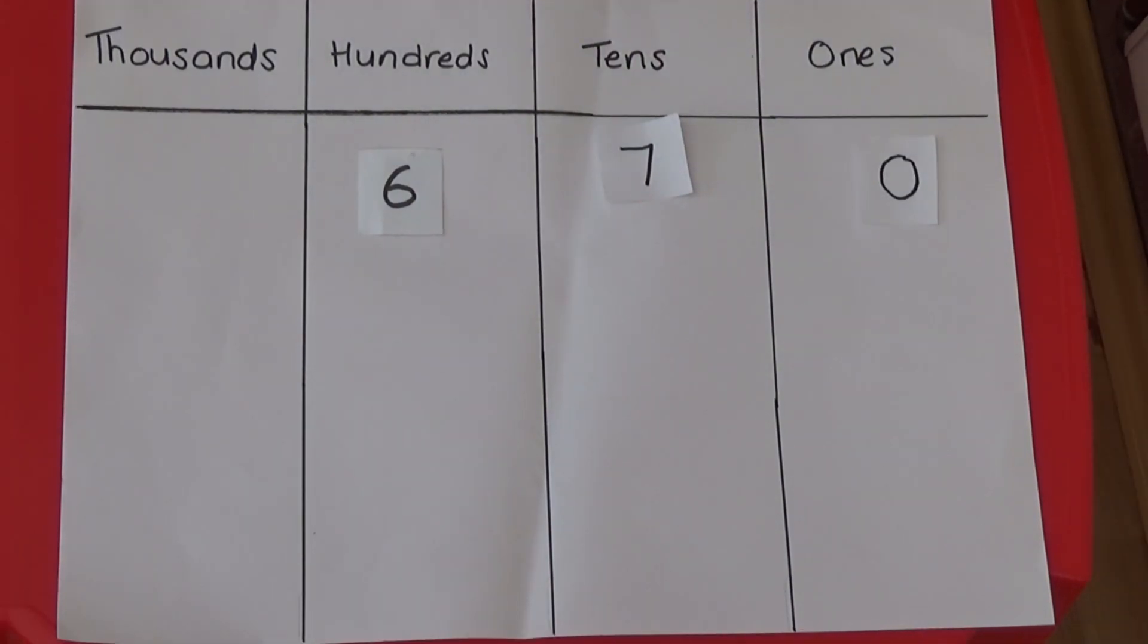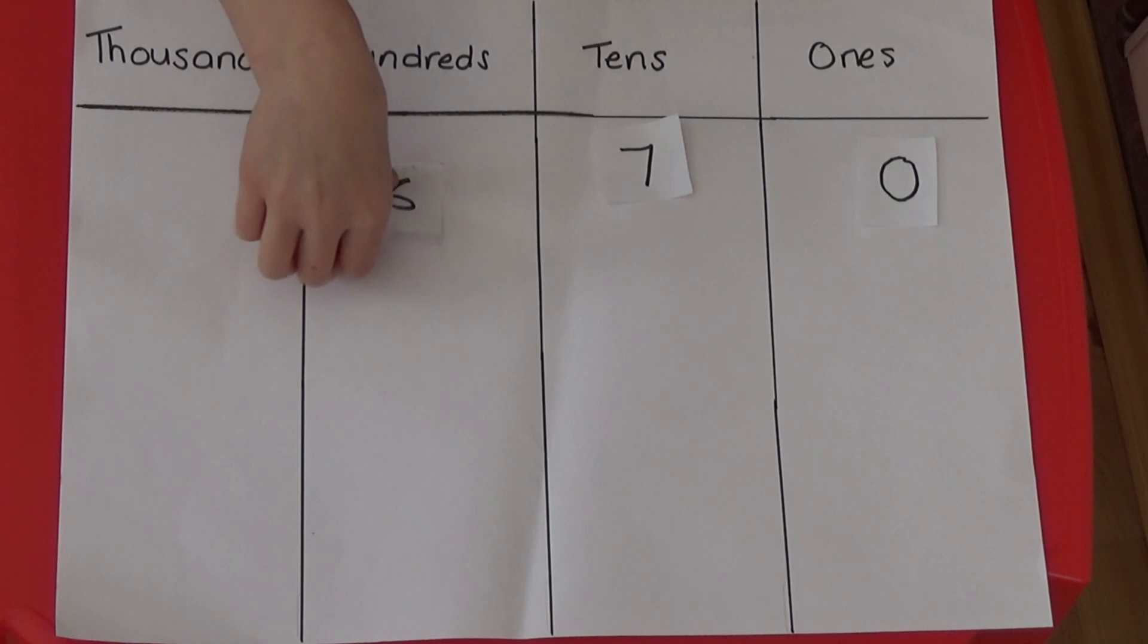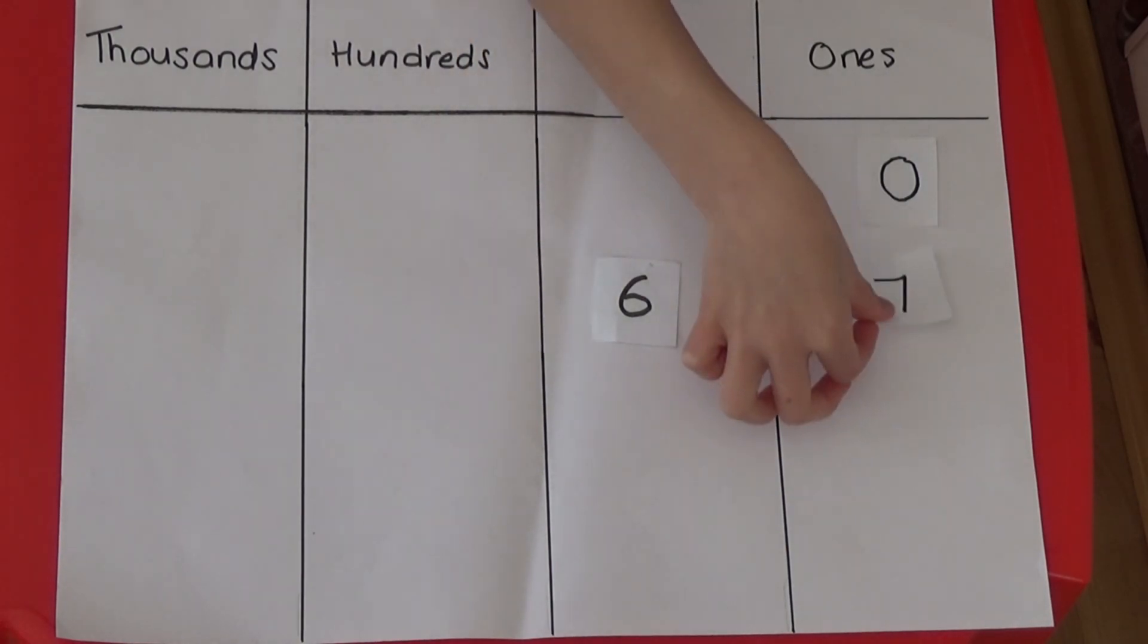As each column to the right is 10 times smaller, to divide by 10, we move each digit one column to the right. It then becomes 10 times smaller, or a tenth of the size of the column to the left. So here, 600 becomes 6 tens. 70 becomes 7 ones. And I need to remove the zero.